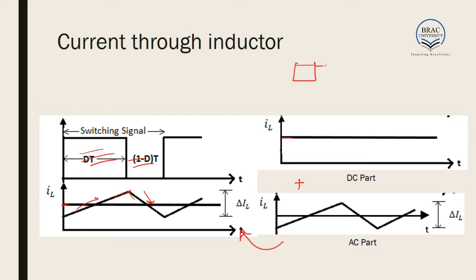Adding the DC part and AC part gives the total inductor current. In any converter, the output is connected to a resistor and a filter capacitor. The DC part passes to the resistor and the AC part passes to the filter capacitor, and as a result the filter capacitor can be used to decrease ΔI_L and thereby decrease the output voltage ripple.